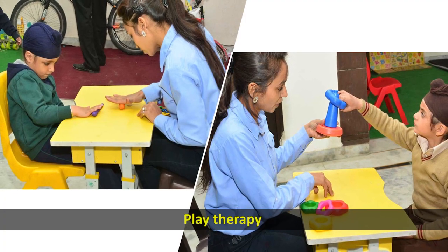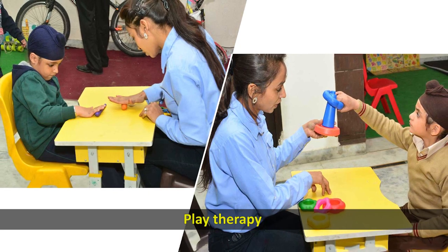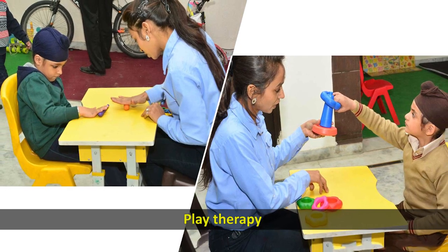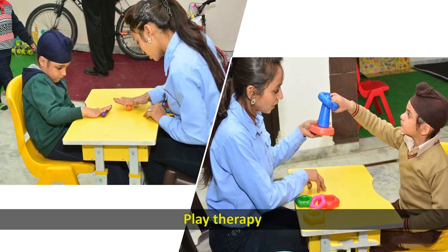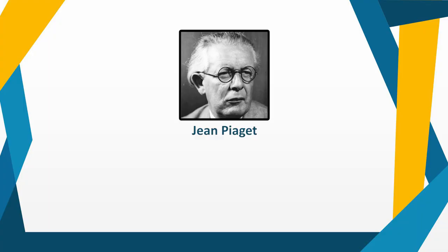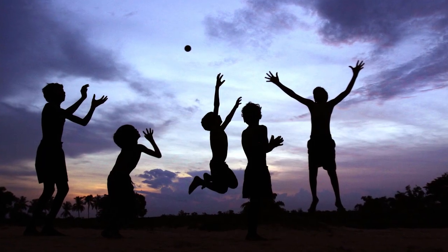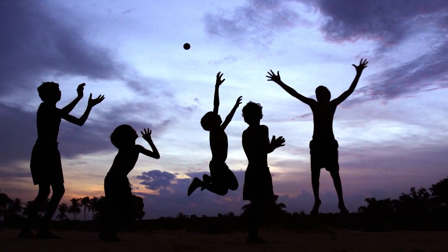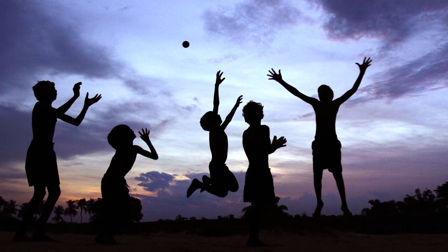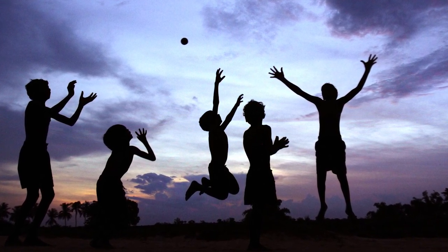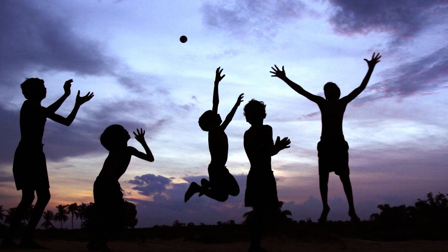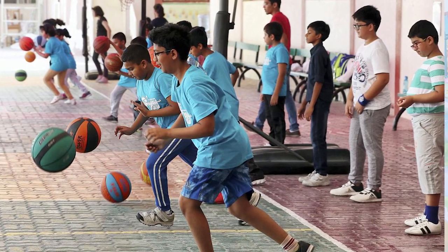Therapists use play therapy both to allow the child to work off frustration and to analyze the child's conflicts and ways of coping with them. Piaget defined play as assimilation — in other words, the child's efforts to make environmental stimuli match his or her own concepts. He claimed that play was just for pleasure, reminding children of previously learned practices or activities, though it does not necessarily result in learning new tasks.